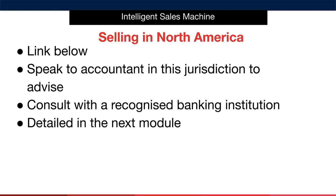To see if your country of residence is eligible to sell on Amazon, I've left a link below the video for you to check this directly. Next, you must speak to an accountant in your jurisdiction to advise whether to set up a company in your country or directly in the US. Of course, if you're already based in the US, this isn't an issue — you'll likely only want to look into what state makes the most sense for you, and an accountant will help you determine this. Next, consult with a recognised banking institution to set up a bank account for the company you set up. Finally, I'll go into setting up your Amazon seller account in the next module. This is extremely simple once you have your company set up.